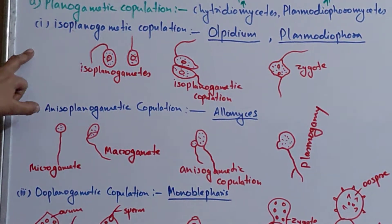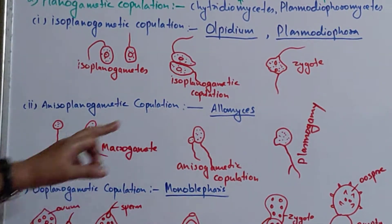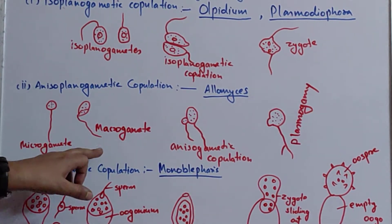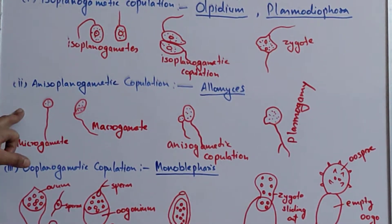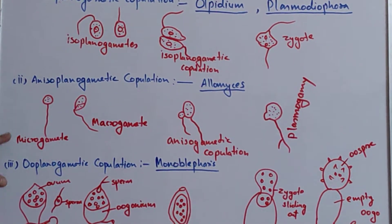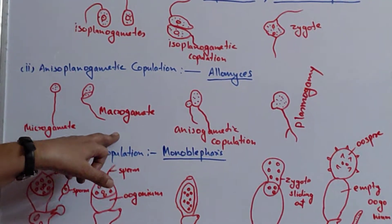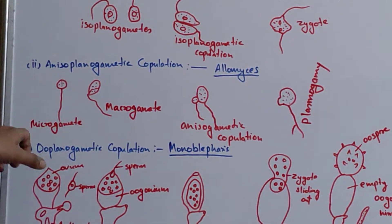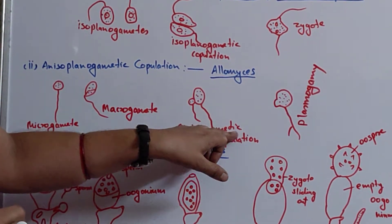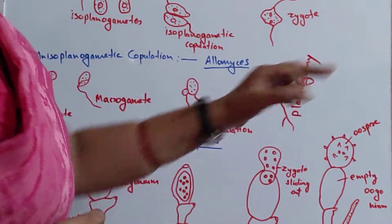The next type is anisogametic copulation. Here the copulating gametes are morphologically similar but differ in their size — one is smaller and another is larger. The smaller gamete is called microgamete and the larger gamete is called macrogamete. The fusion of microgamete and macrogamete is called anisogametic copulation, and after fusion they give rise to a zygote.